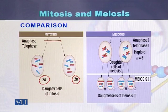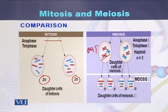In case of meiosis, at the end of meiosis 1, each cell contains three chromosomes — three in cell 1 and three in cell 2.